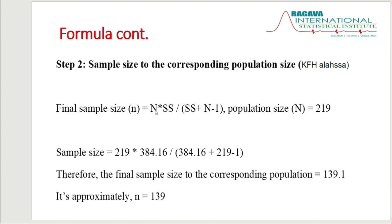Substituting the values: N = 219 and SS = 384.16 from step one. So n = (219 × 384.16) / (384.16 + 219 − 1). Simplifying this gives 139.1, which is approximately 139. So the sample size for this scenario is 139 — out of a total of 219 records, you need to choose 139 records for your medical record review.